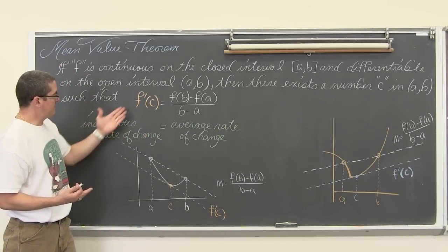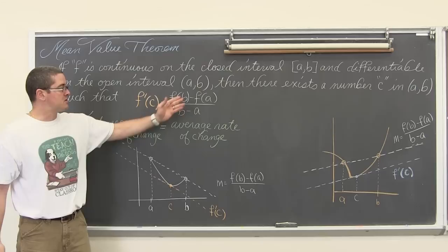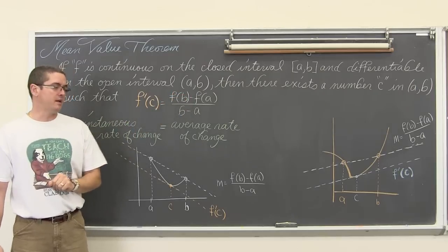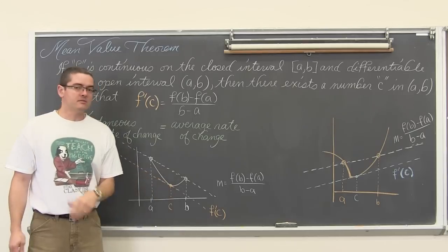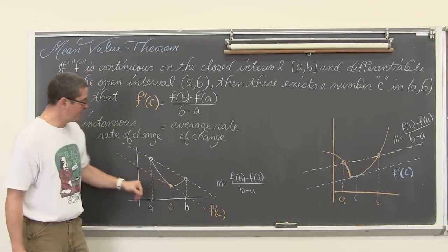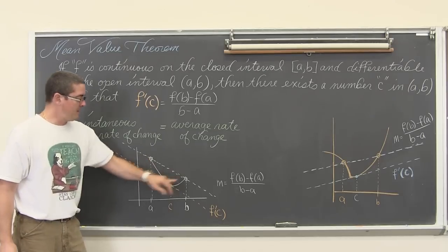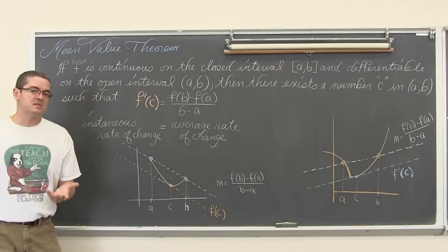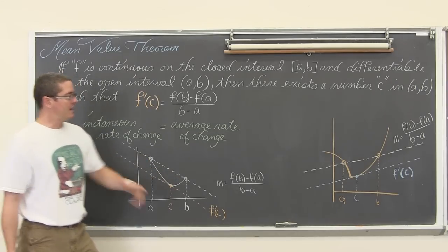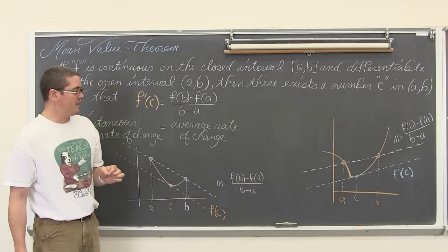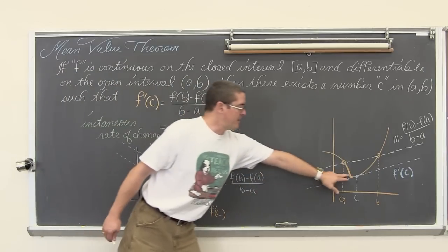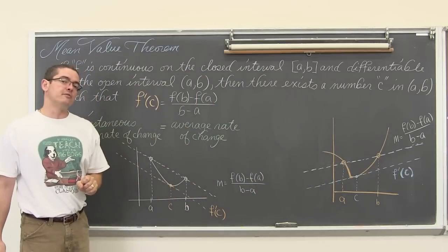So what does that mean? That the instantaneous rate is equal to the average rate of change? Well, I have drawn a continuous and smooth curve going from a to b. That means the fact that it is smooth means it is differentiable. I have a non-example over here. It is in orange because my camera does not pick up the red that great.